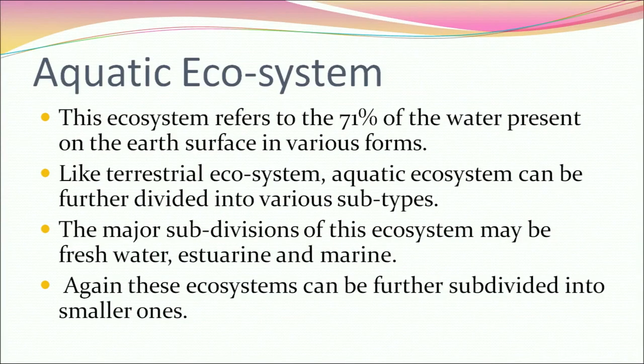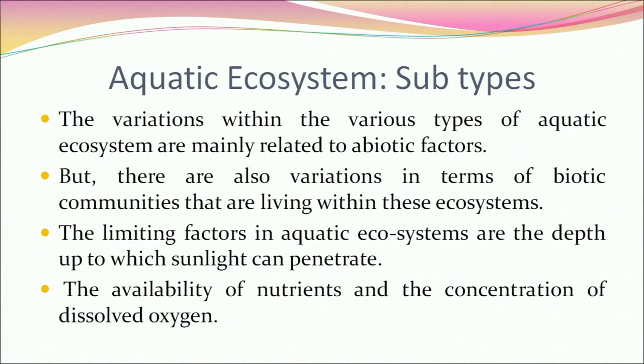The aquatic ecosystem refers to the 71% of water present on the Earth's surface in various forms. Like the terrestrial ecosystem, it can be further divided into various subtypes: freshwater, estuarine and marine. Variations within the various types of aquatic ecosystem are mainly related to abiotic factors, but there are also variations in biotic communities. The limiting factors in aquatic ecosystems are the depth to which sunlight can penetrate, the availability of nutrients, and the concentrations of dissolved oxygen.